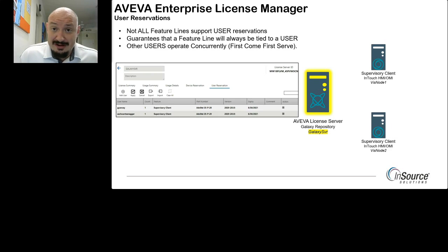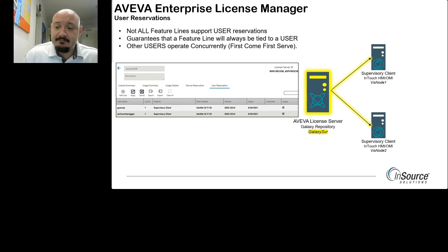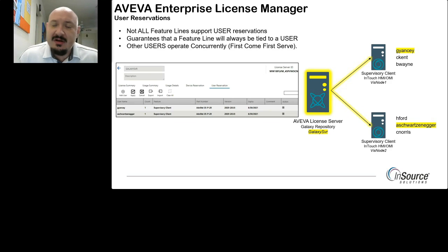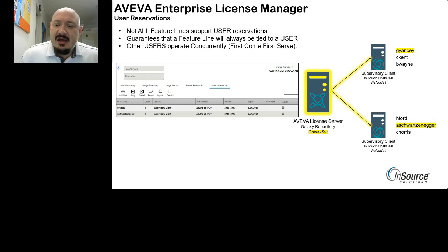How does this work with concurrent licensing? It's still first come, first served for everyone else. But for myself and Arnold Schwarzenegger, we always have a license waiting — nobody else can use it because it's tied to our usernames. Other users such as Clark Kent, Bruce Wayne, Harrison Ford, and Chuck Norris act in concurrent license fashion. If I have five licenses with two reserved, then one of the remaining four users will not receive a license until another relinquishes theirs.